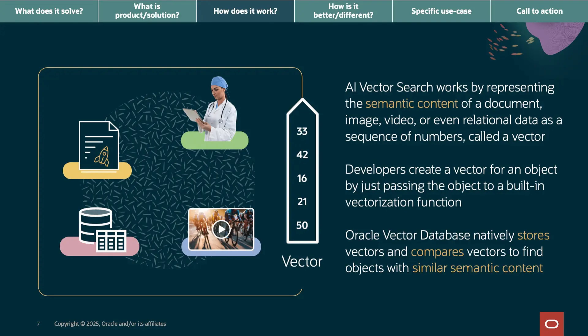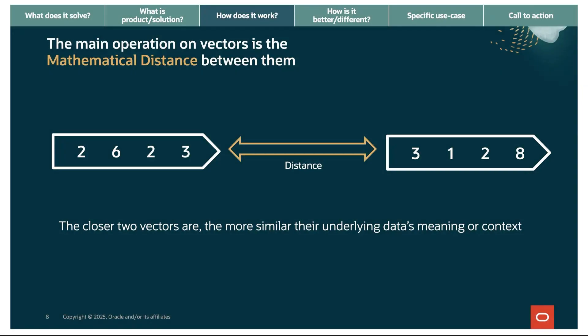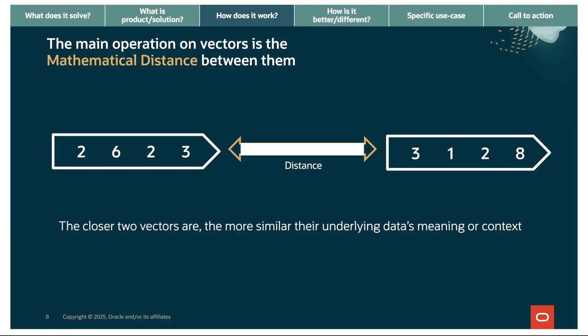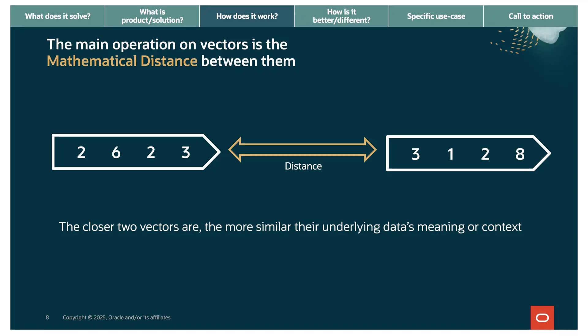Now, about this mathematical distance concept — I'm not making this a calculus class, but understanding this one concept helps you appreciate why vectors are so powerful. These two vectors, [2, 6, 2, 3] and [3, 1, 2, 8], represent the semantic content of two different pieces of data. The distance between them tells how similar they are in meaning. The closer two vectors are in mathematical space, the more similar their underlying content and meaning. That's the key to making semantic search possible. This is how Oracle understands that 'red sneakers' and 'crimson running shoes' mean essentially the same thing, even though they share no common words.